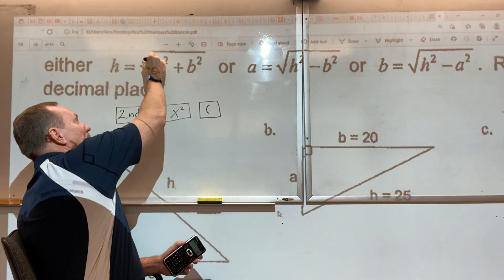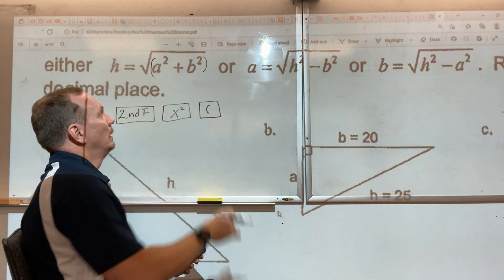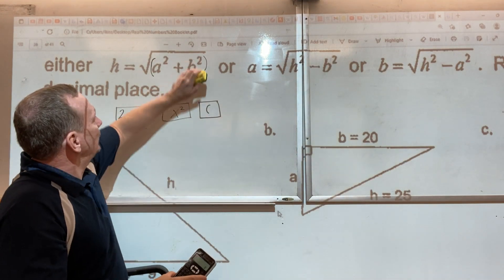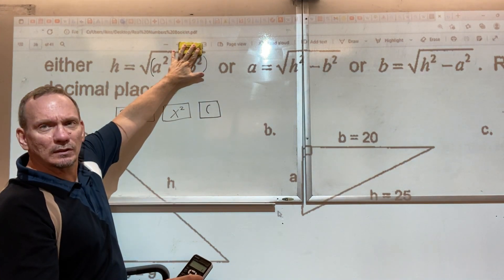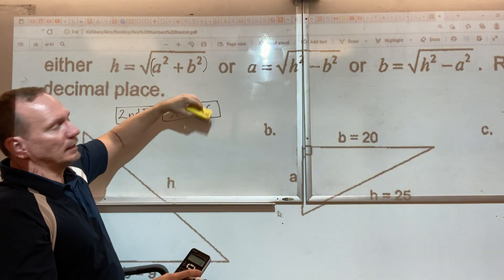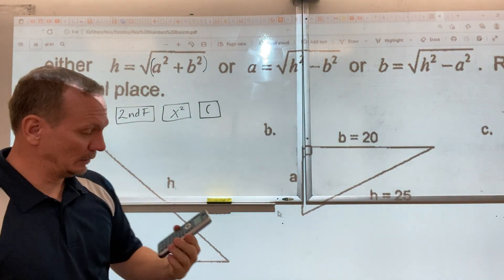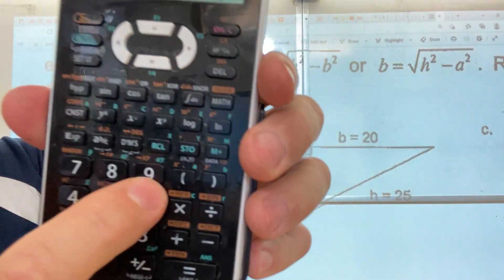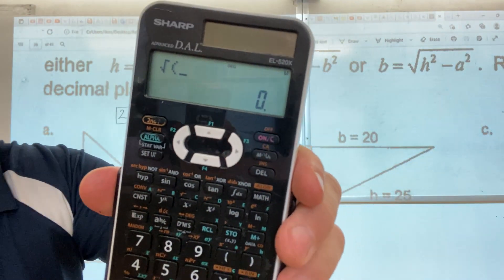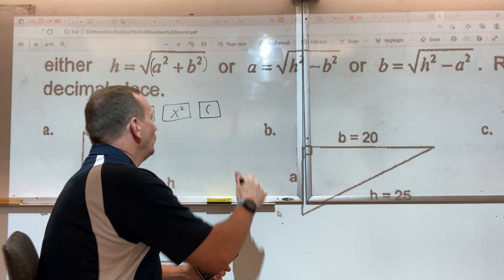Next thing you do is open bracket. Essentially what we're doing is we're making a bracket around this, because otherwise the calculator is only going to calculate the square root of the first number and then add the square root of the second number, not good. So we need a bracket. The open bracket is right around here.